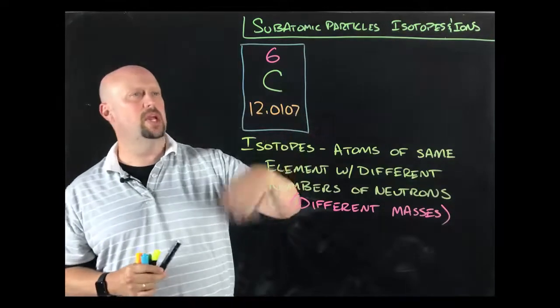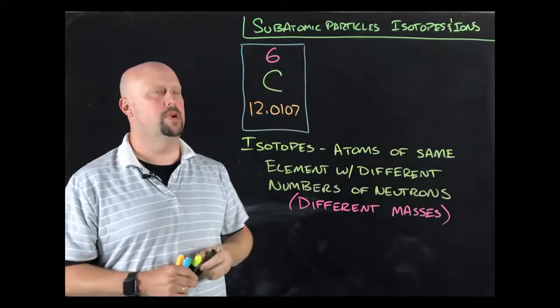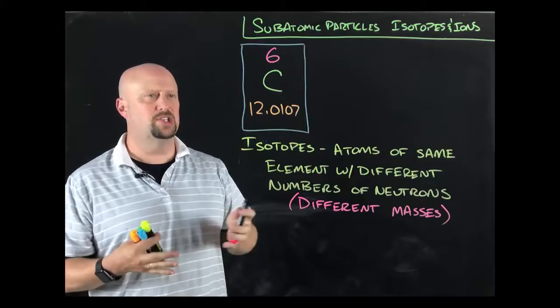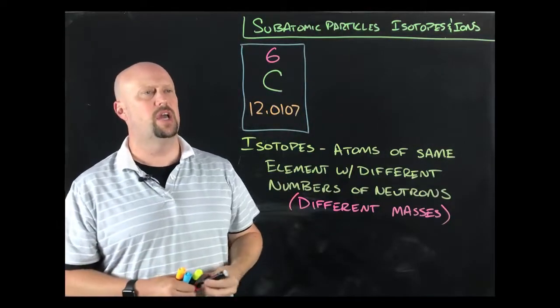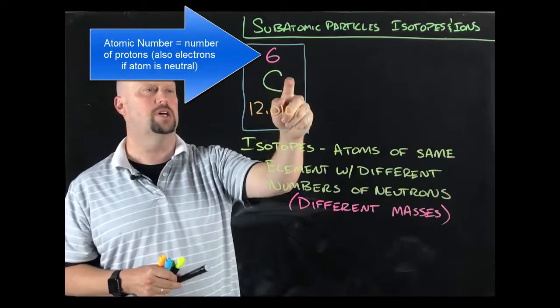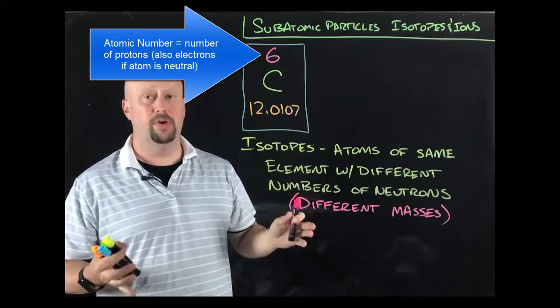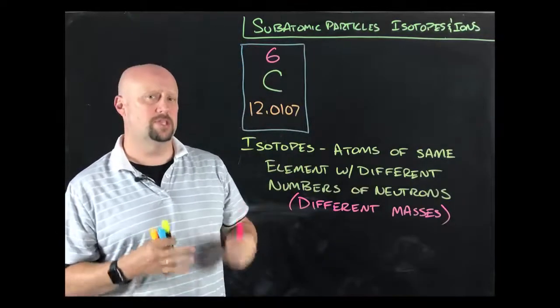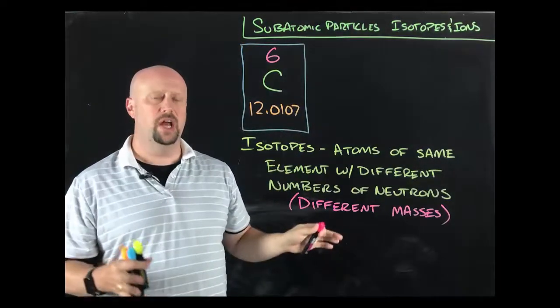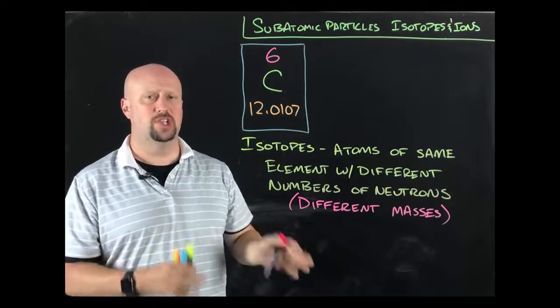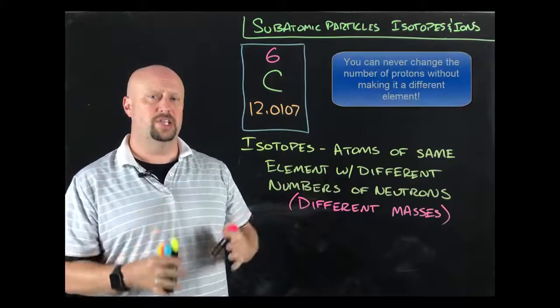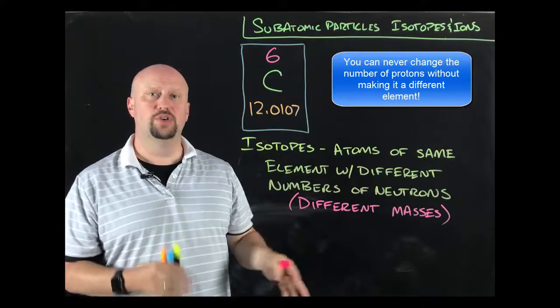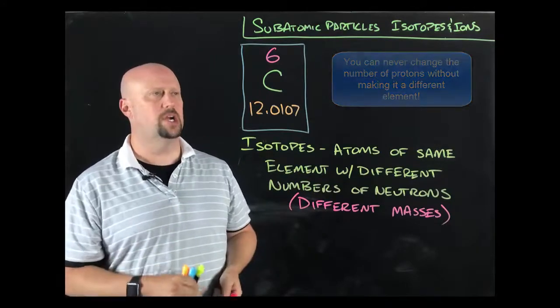Remember we mentioned in the last video that this top number is the atomic number, that's the number of protons. That is essentially the defining characteristic of an element. If it has six protons, it is a carbon. If it has eight protons, it would be an oxygen. So that number of protons becomes the defining characteristic. You cannot, under any circumstances, change the number of protons and still have it be the same element. However, that's not true for electrons and neutrons, and that's what we're going to talk about in this video.